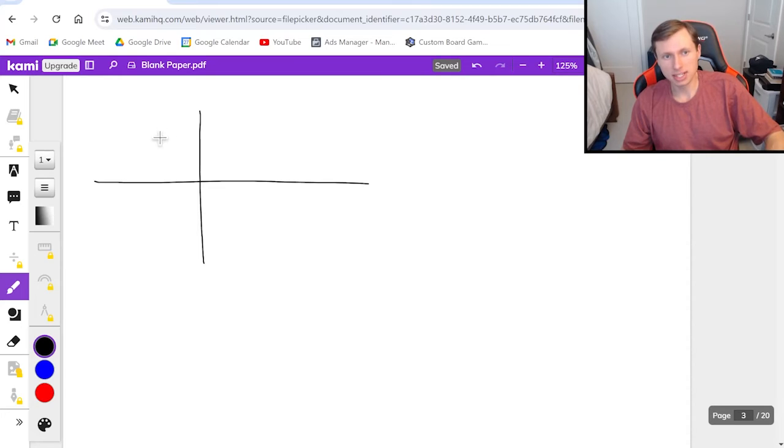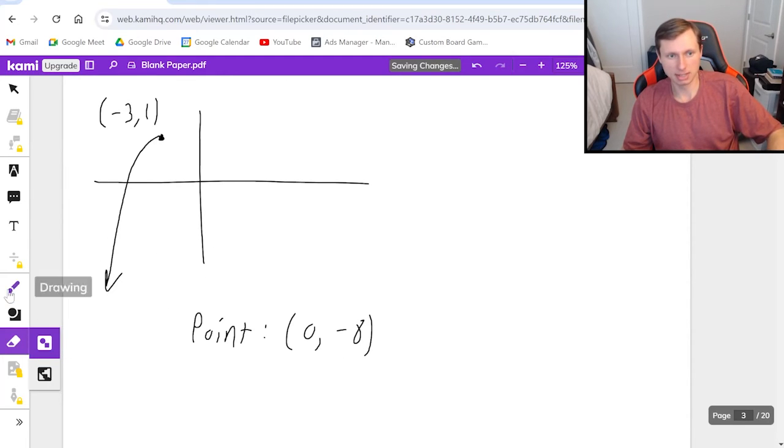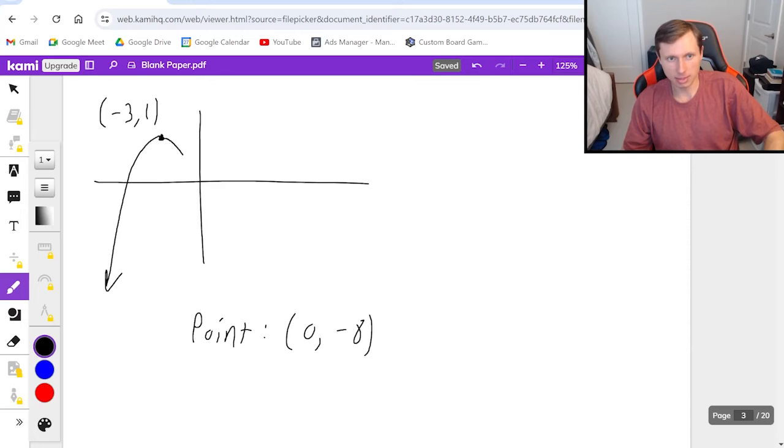But the vertex is going to be at this point right here at negative 3 comma 1. And it's going to open downward like this. And I'm going to give you the second point. The second point is 0 comma negative 8. So maybe I didn't draw this parabola the best. If it's 0 negative 8, it means it's probably something more like this. And this point right here is 0 negative 8.